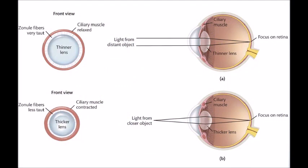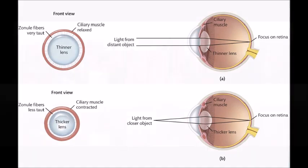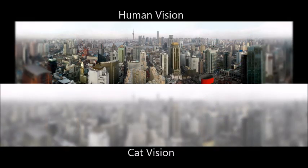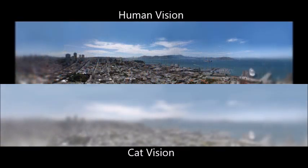Furthermore, the lens in both cats and humans can become thicker or thinner due to the pulling of the ciliary muscles, in order for the eye to focus on either nearby objects or distant objects, respectively. However, lens changes in the cat are more limited than in humans due to cats' more diminished ciliary muscles, making cats comparatively more nearsighted. Far away objects that humans can see fine would appear blurrier to cats.